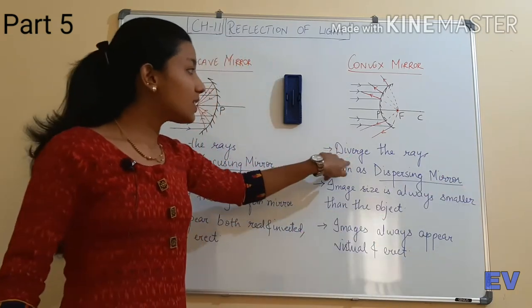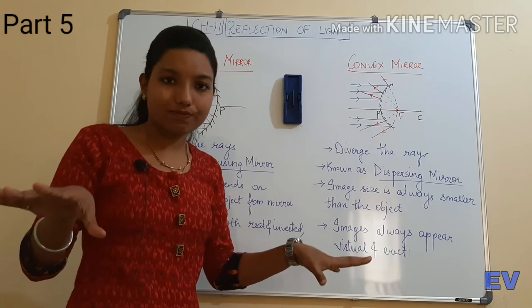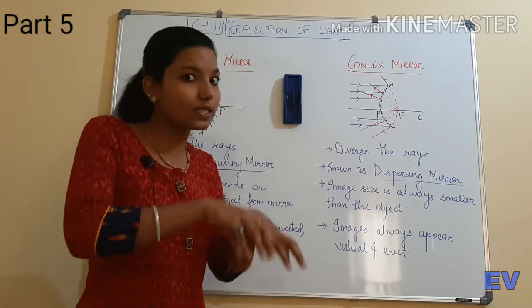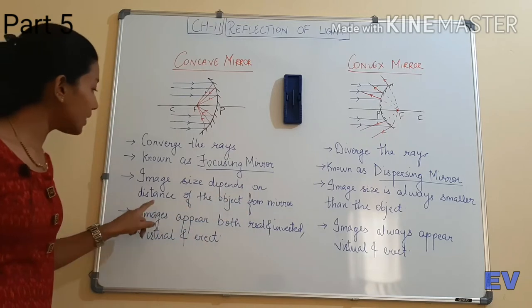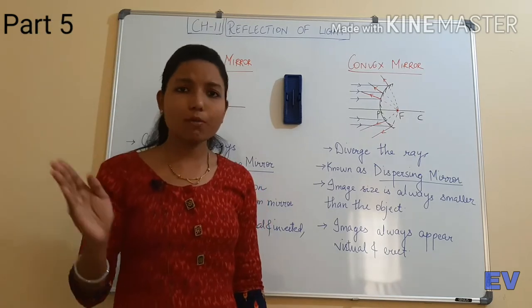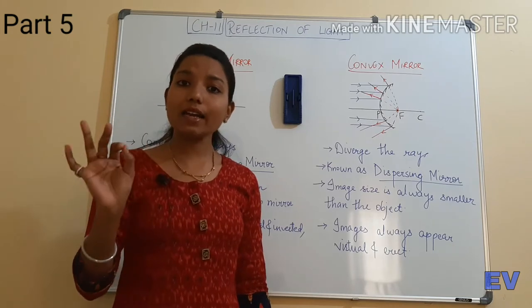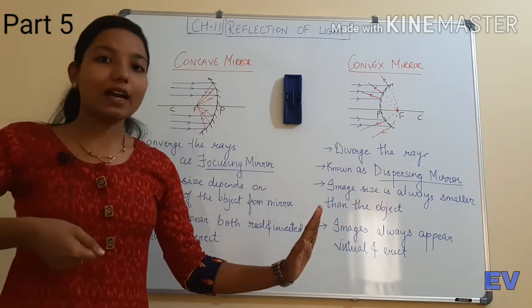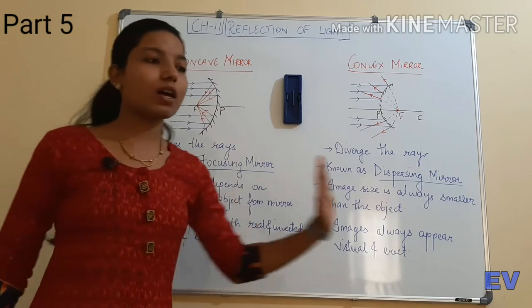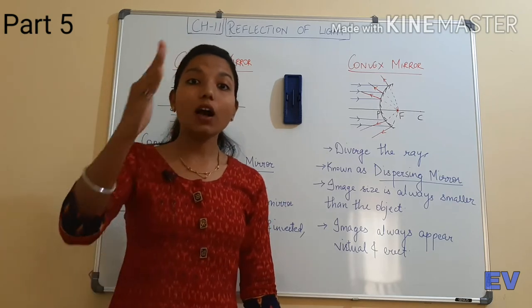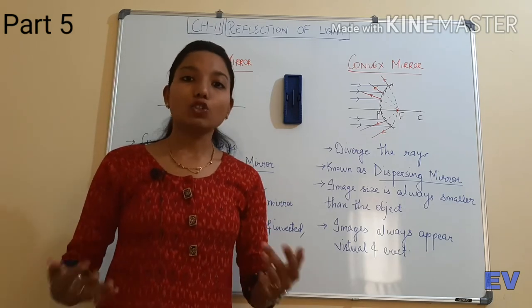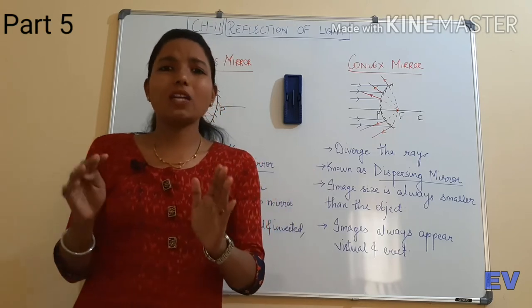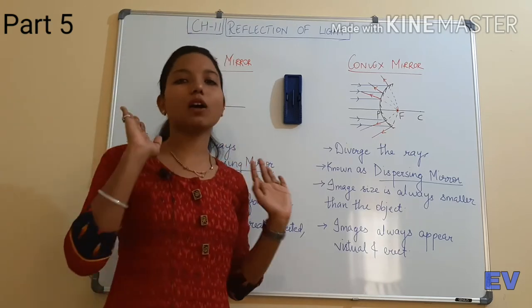Convex mirror is called a dispersing mirror since it diverges — it disperses rays. Third point: image size depends on the distance of the object from the mirror. We saw six cases in image formation where we changed the object position each time. Just like pushing the object forward or pulling it back changes the image position — image distance depends on the distance of the object from the mirror.